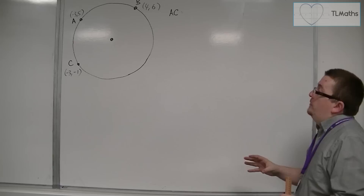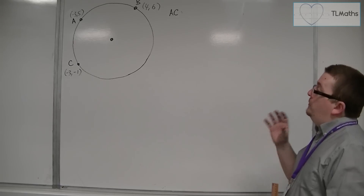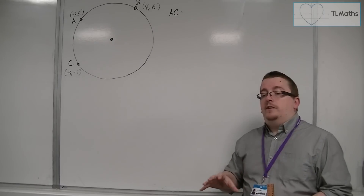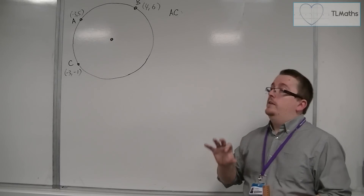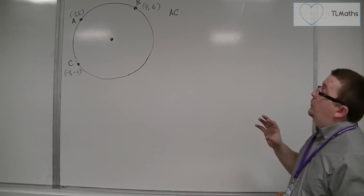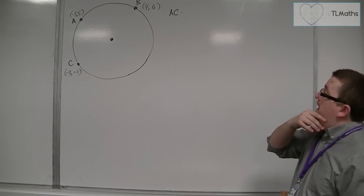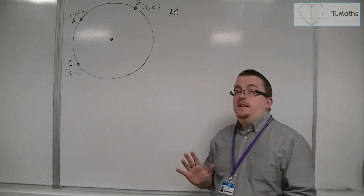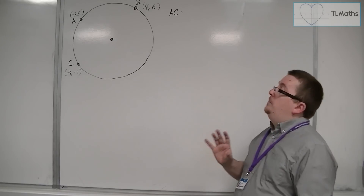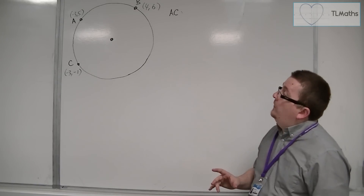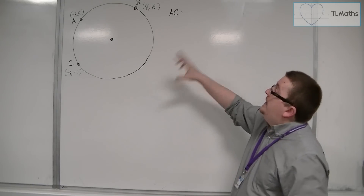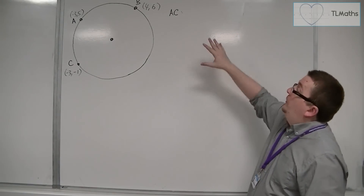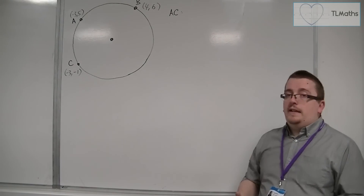In order to do this, we're going to find the perpendicular bisectors of pairs of these points — these three points I've labelled A, B and C. We'll find that we only need to do that twice, so we only need to pick two pairs, and I'm going to pick A,C and A,B as my two pairs. I'm going to start off with A,C.